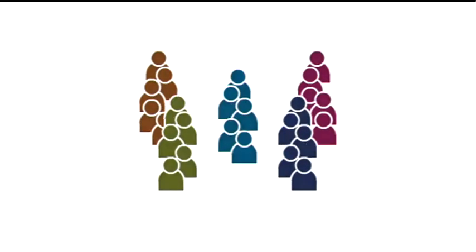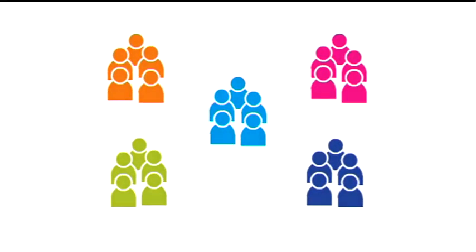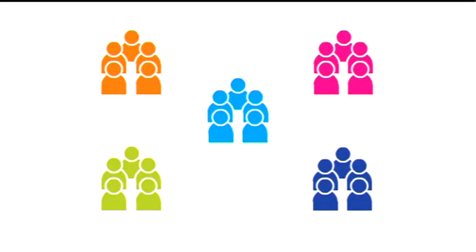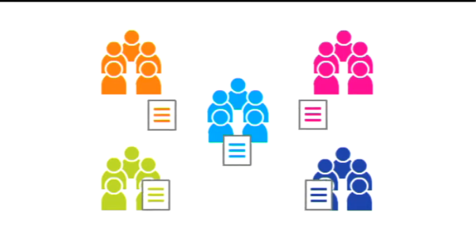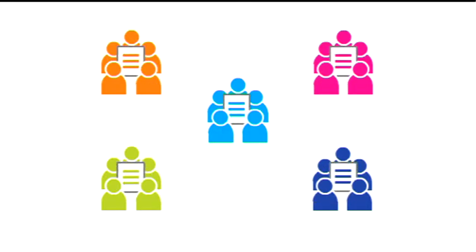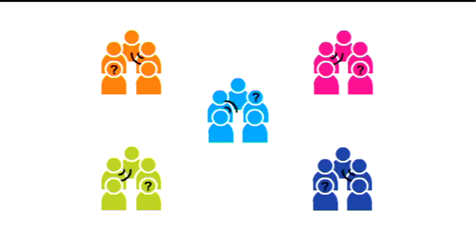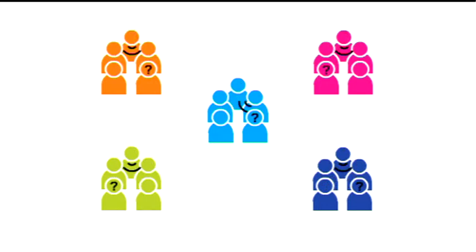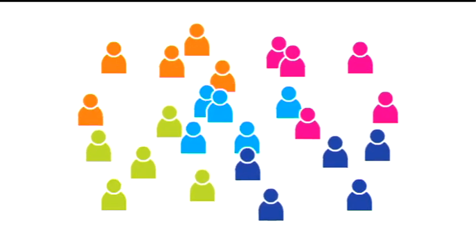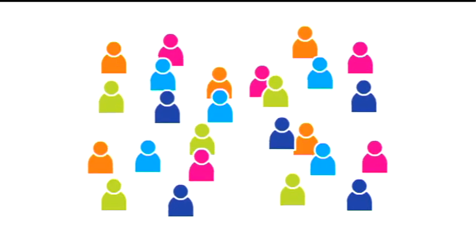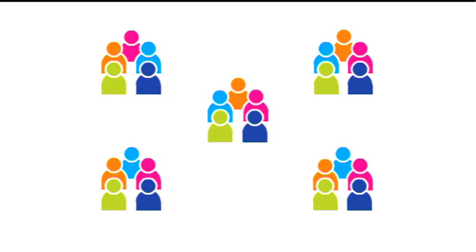I would divide the class into groups of about four or five — these would be my research groups — and each group would have stimulus material or be told to go away and study particular bits of information. After the research groups have been given sufficient time to do what they need to do, I would break them up into what we call conference groups.